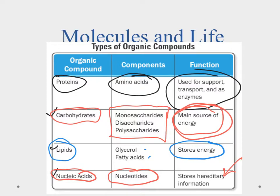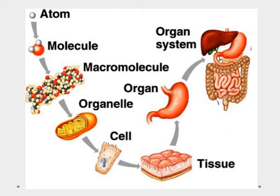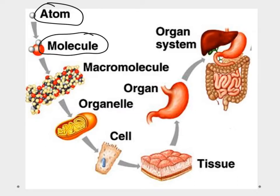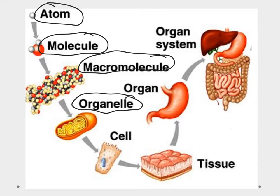This picture shows us a little bit of organization and how we can put things together. We start off with atoms — two or more atoms come together to form a molecule. These molecules can come together to form a larger molecule, which we call a macromolecule. Those macromolecules can then form organelles, which ultimately form a cell.